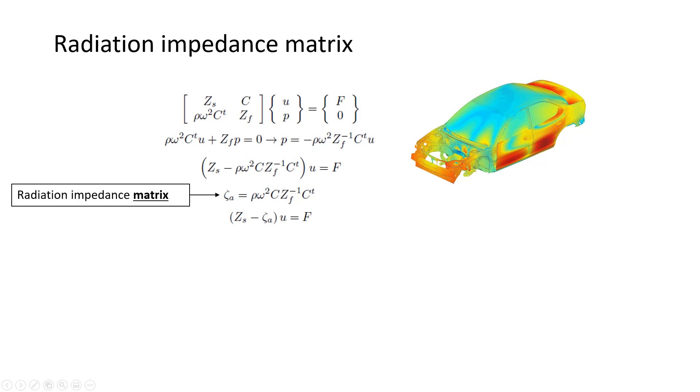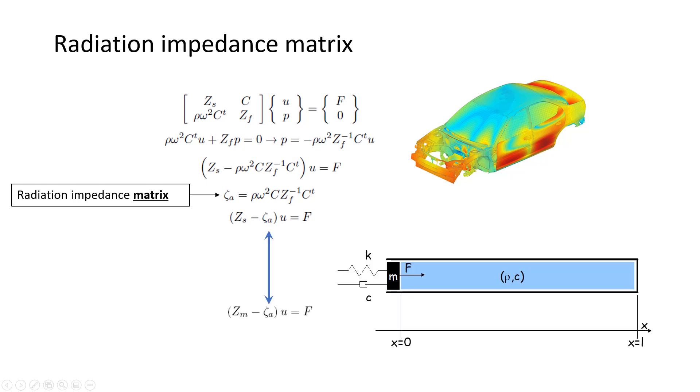And so we have now a modified equation, which is Zs minus Zeta A times U is equal to F. And coming back to my simple tube model, this is exactly what we had obtained also. So you see here very clearly the similitude between the most simple and the most complex problems in vibroacoustics.